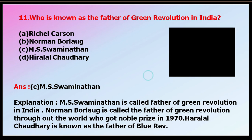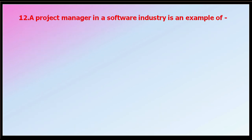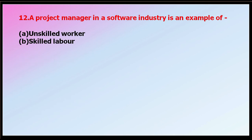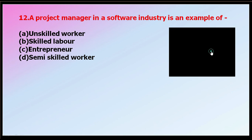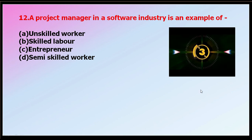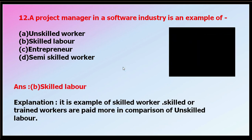Question number twelve: a project manager in a software company is an example of which type of worker? Options: unskilled worker, skilled labor, entrepreneur, or semi-skilled worker. The correct answer is skilled labor. A project manager in a software company is a skilled worker. Skilled or trained workers are paid more compared to unskilled workers and require specific training.